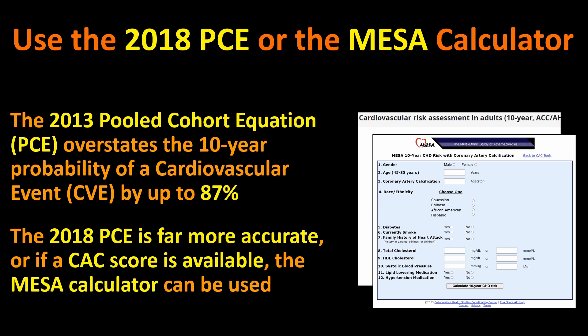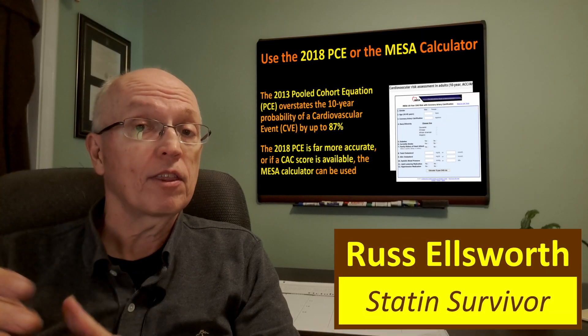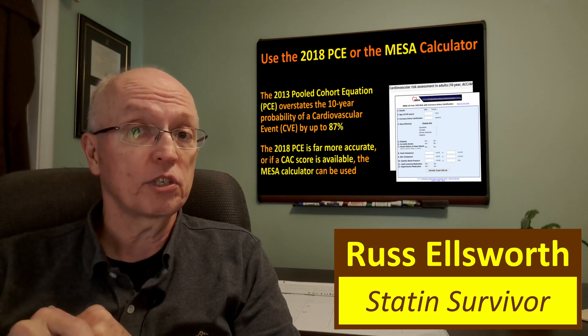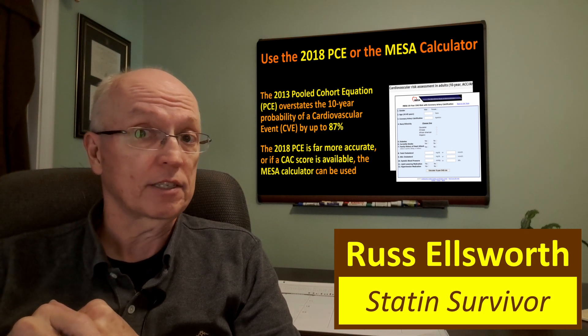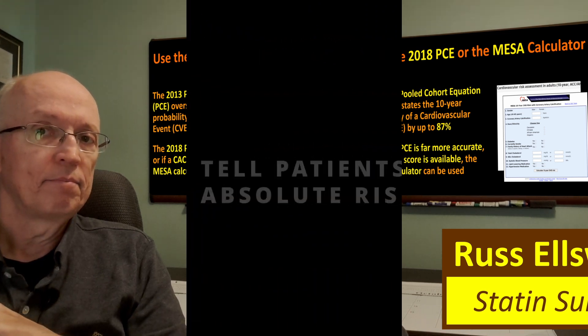And if you do have a coronary artery calcium score you can use the MESA calculator. I find it interesting that the 2018 calculator is available on the Merck website — that is a pharmaceutical company. If any organization had a reason to overstate your risk it would be a pharmaceutical company, yet they provide the more accurate one and the American Heart Association uses the less accurate one that overstates risk. You decide.